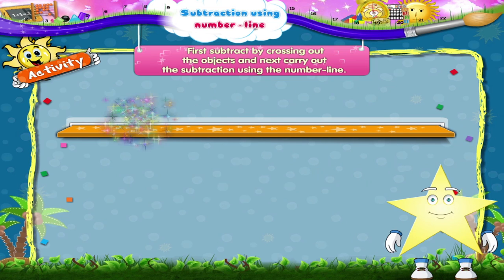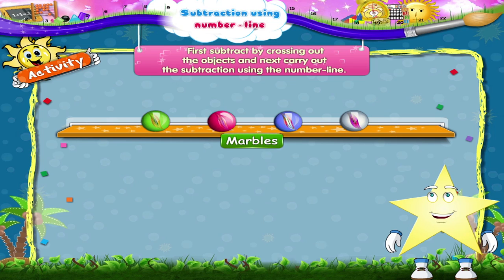And now the marbles. One, two, three, four marbles minus one, two, three marbles. That's four minus three equals one marble.